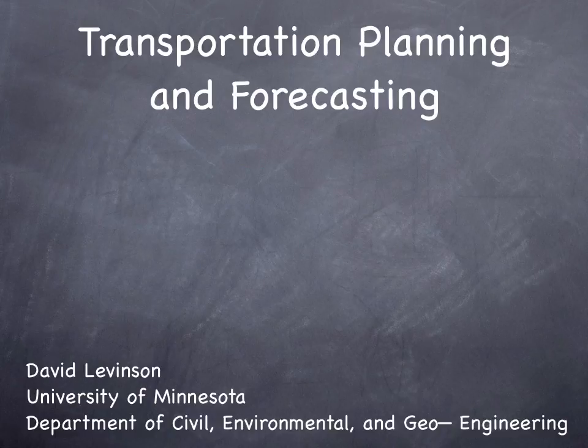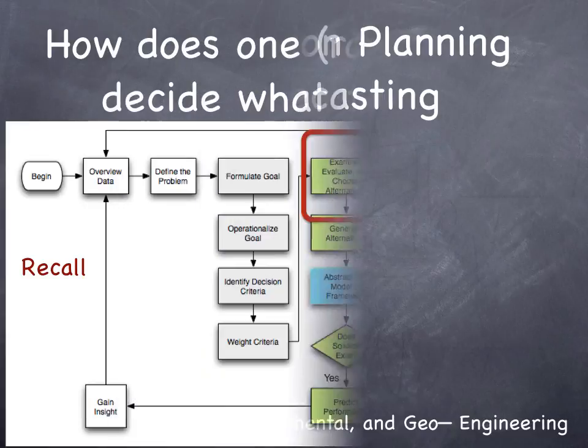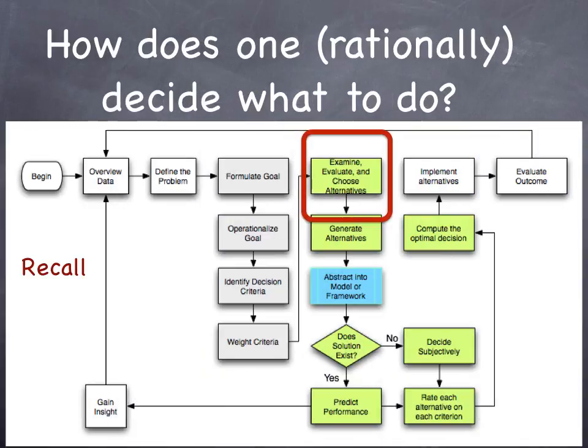This video is about transportation planning and forecasting. Recall the rational planning model — there were a number of steps. We began, overviewed data, defined the problem, formulated the goal, examined, evaluated, and chose alternatives. We implement the alternatives and we evaluate the outcome.